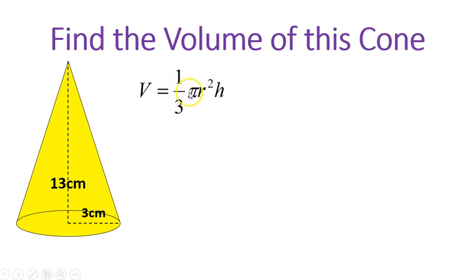Notice this part of the equation, pi r squared, is an area of a circle equation. It's asking for the area of that circle. So sometimes you'll be given the area of that. And if that's the case, you would just say one third times the area times the height.